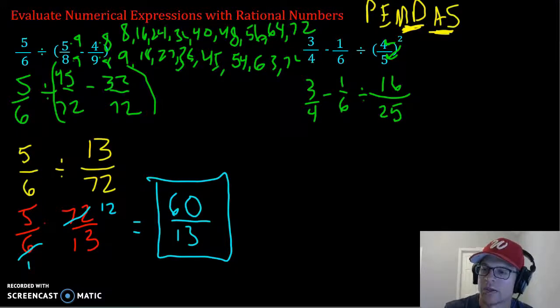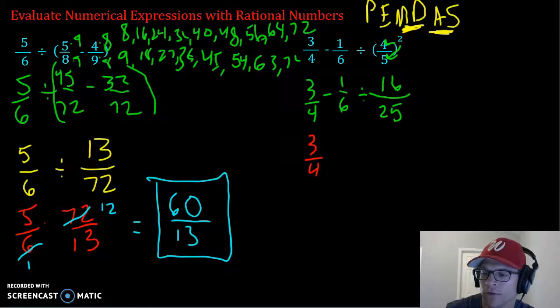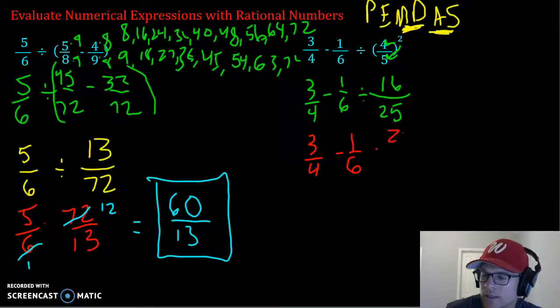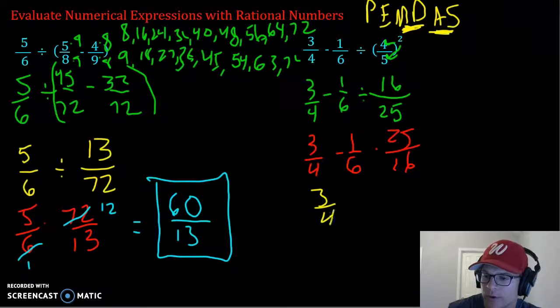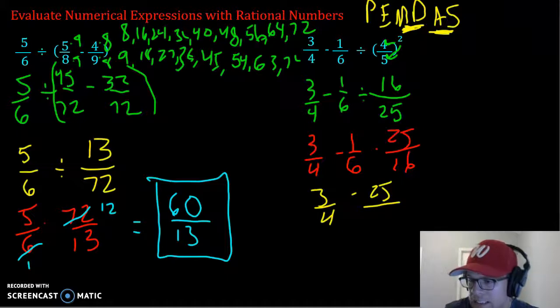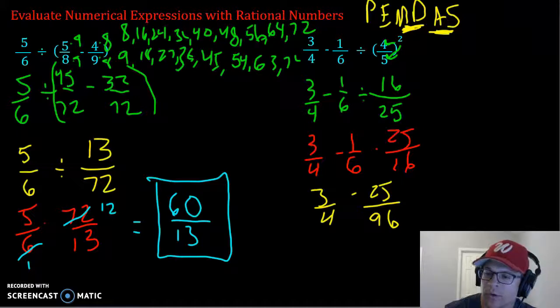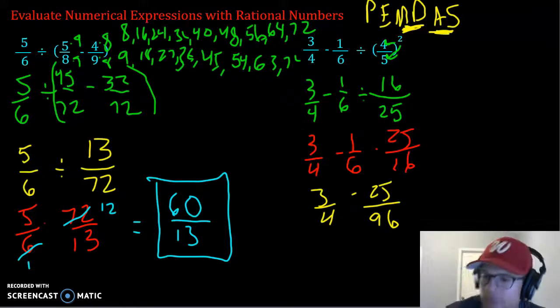All right, we have subtraction and division. Division comes before subtraction, so we're going to follow our division rules, very similar to what we did earlier. We keep the first fraction, keep the very first one in the expression, change to multiplication, flip the second fraction. So when multiplying, 1 times 25 is 25. 6 times 16 is 96. 6 times 6 is 36, carry the 3. 1 times 6 is 6, add the 3.